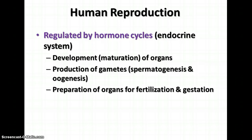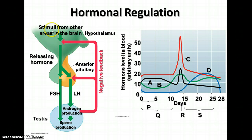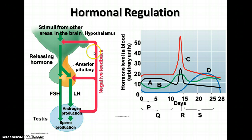Human reproduction is regulated by hormone cycles, which are part of the endocrine system. These hormones are involved in the development and maturation of reproductive organs, the production of gametes through spermatogenesis and oogenesis, and the preparation of organs for fertilization and gestation. A negative feedback system runs from the hypothalamus to the pituitary to control sperm production in the testes. When androgen levels reach the set point, negative feedback turns off further production. Multiple hormones are involved in the female reproductive system, peaking at different times due to their different functions.